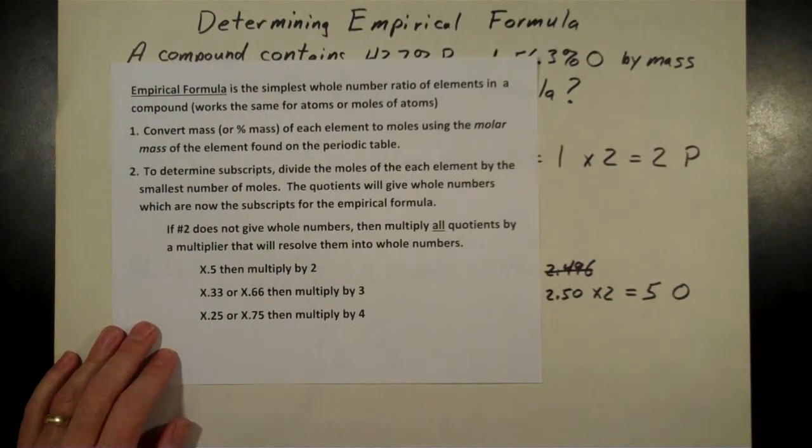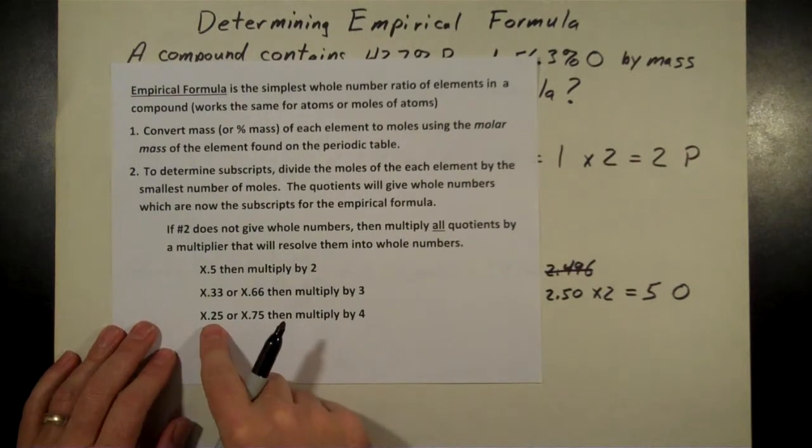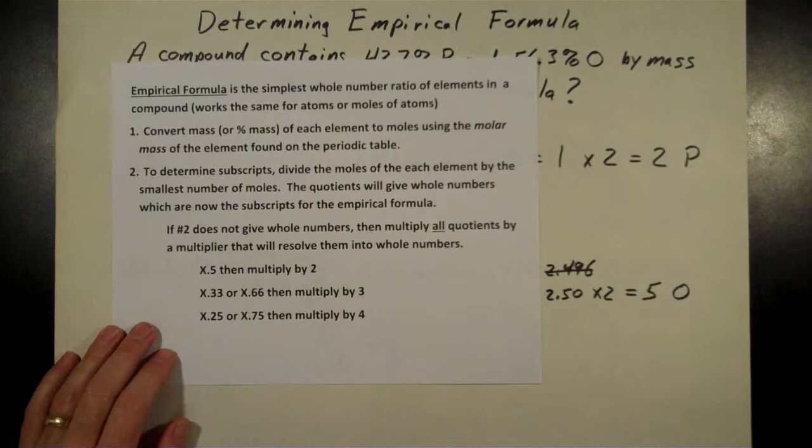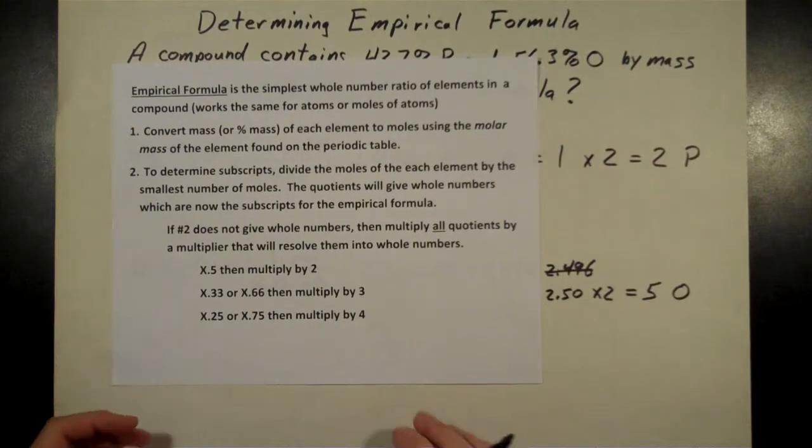You may also get either a 0.33 or a 0.66 or something close to that—that's when you got to multiply everything by 3. Really rare is this one here, a 0.25 or a 0.75, then you can multiply everything by 4 and get whole numbers that way.